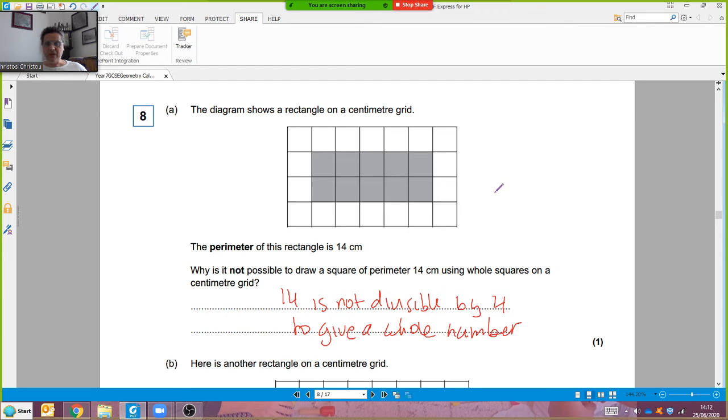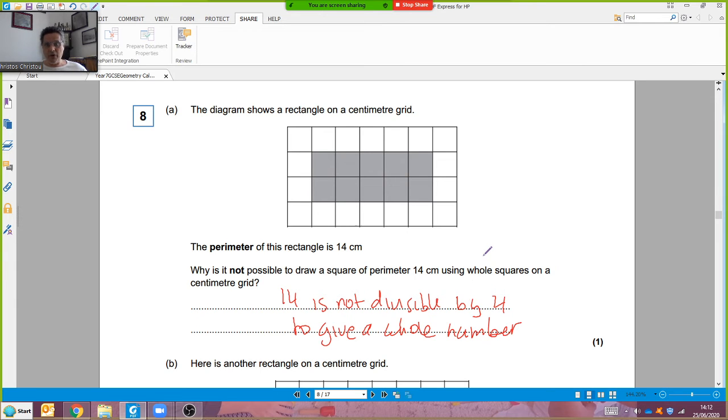The diagram shows a rectangle on a centimeter grid. It's got a perimeter of 14. Why is it not possible to draw a square of perimeter of 14? Somebody mentioned the graph paper is not big enough. Well that's really silly. It's not about the size of the paper. It's the fact that you cannot divide 14 by 4. You can't get whole numbers to come to 14. So I wrote down 14 is not divisible by 4 to give a whole number.